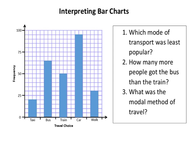We're looking at interpreting bar charts here. I've got a bar chart that I've drawn, with the gaps there. Frequency means how many in that group. So which mode of transport was the least popular? Well that's obviously going to be the smallest bar, so that's going to be taxi.